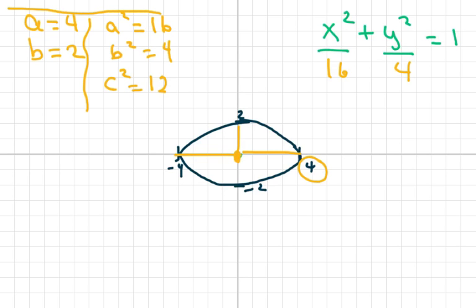So that means your c is plus or minus the square root of 12. So to find the foci here, I know the square root of 12 is in between the square root of 9 and the square root of 16.